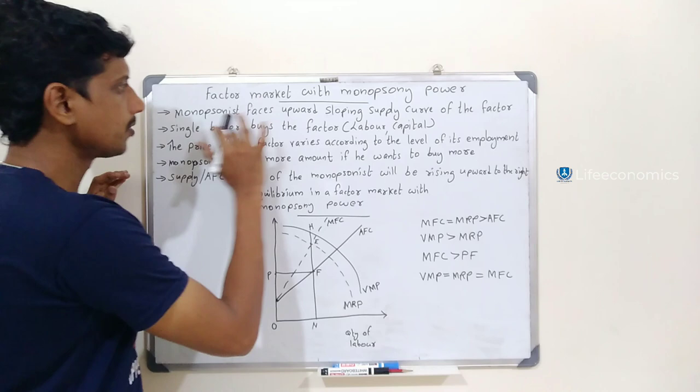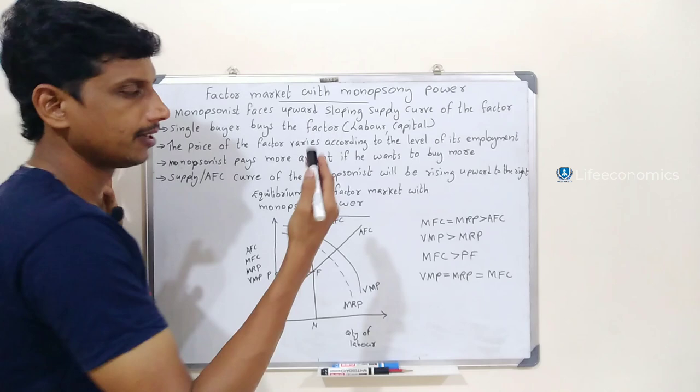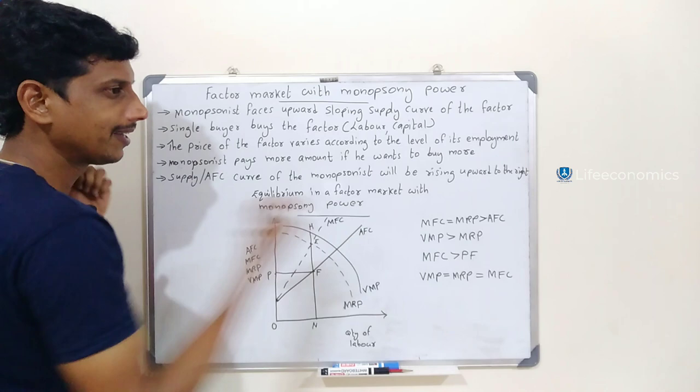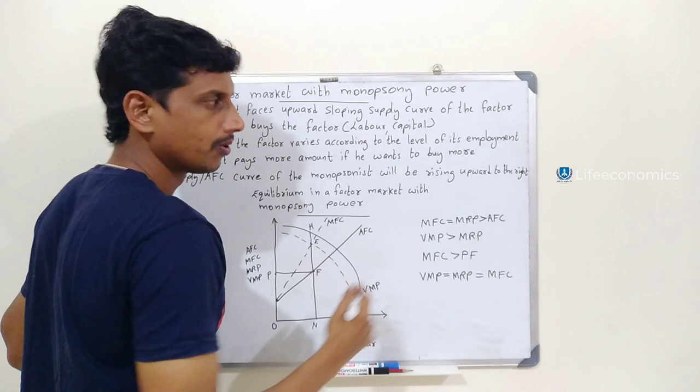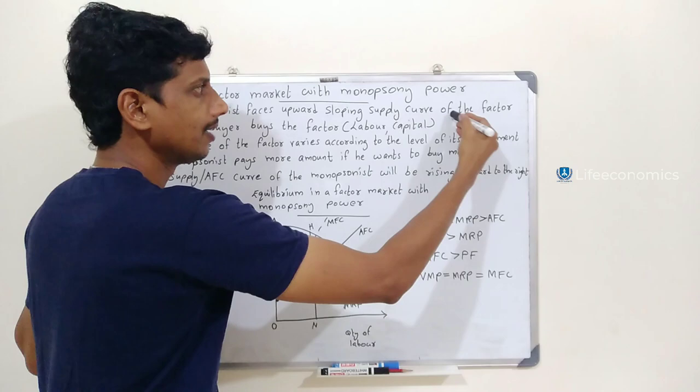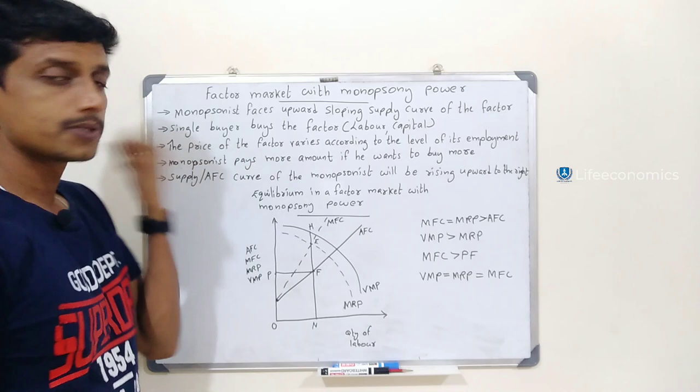What is monopsony power? Monopsony power means the buyer faces an upward sloping supply curve of the factor. The supply curve slopes upward, and this is one sign of monopsony power.